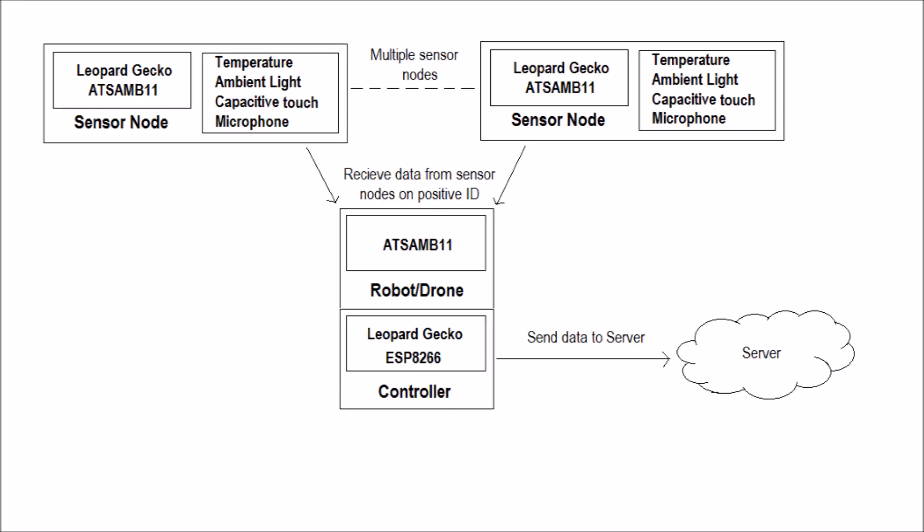Whenever the drone with the master Bluetooth Low Energy module passes around a sensor node, it auto-pairs with the sensor node, collects the sensor data, and passes to the next sensor node. Once the drone receives data from all the sensor nodes, the data is uploaded to the cloud-based ThinkSpeak IoT platform.